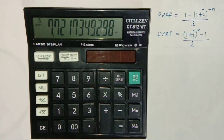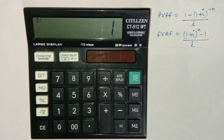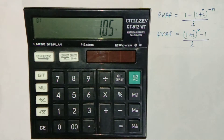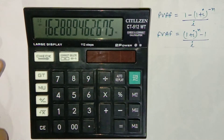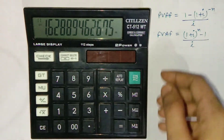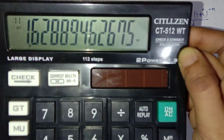Now let me show you how we can calculate the future value annuity factor for the same rate of interest, 5%, and n equals 10. Press 1 point the rate of interest, which is 5%, so 0.05. Now press the multiply button and press equals repeatedly until we get n plus 1 on the left side of the calculator. Since n is 10, we should get 11 on the left side. So I got 11.